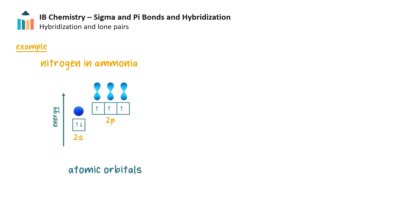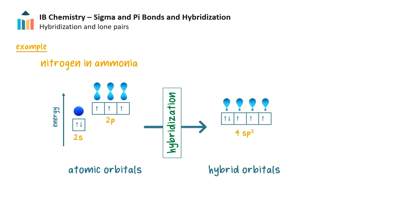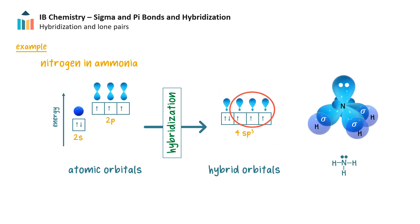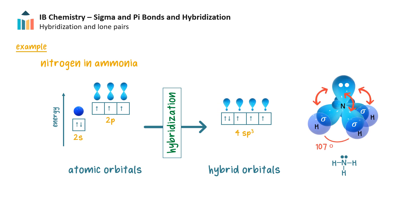Hybridization can also involve lone pairs, for example in ammonia. There are five valence electrons in nitrogen. The valence orbitals can hybridize to form four equivalent sp3 hybrid orbitals. The three half-filled orbitals can each bond to hydrogen atoms by sigma bonds, while the fourth orbital, which is already filled, remains as the lone pair. Slightly more repulsion from the lone pair gives bond angles of about 107 degrees in this trigonal-pyramidal structure.